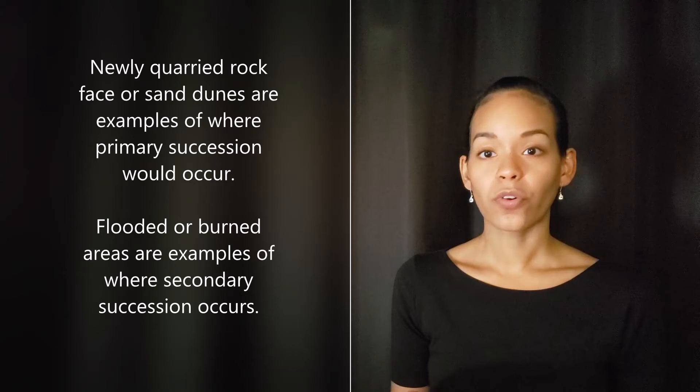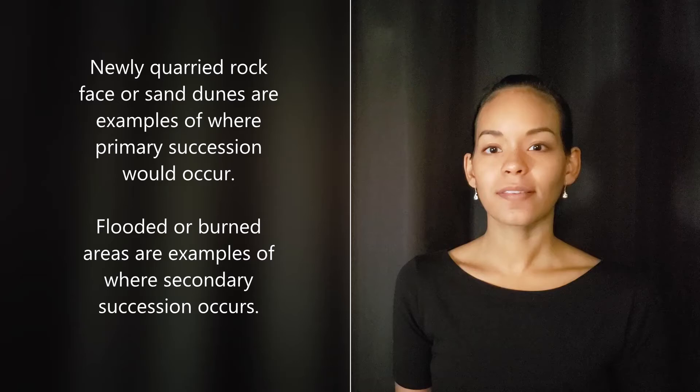Primary succession occurs when a disturbance removes all plant or soil life. Secondary succession begins with a disturbance that alters the community but leaves the soil life intact.